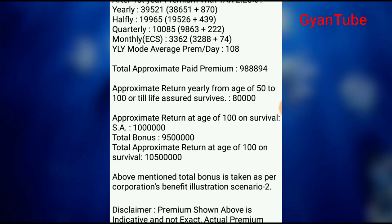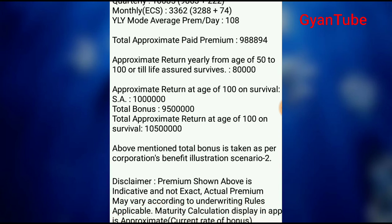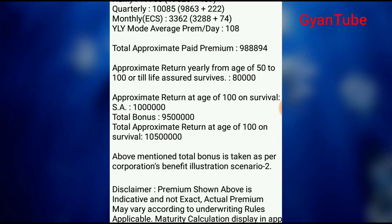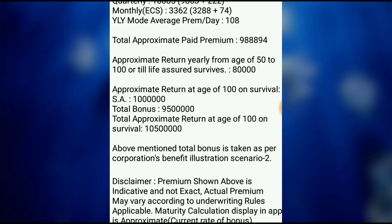Approximately, the return at age 100 would be around Rs. 1 crore 5 lakhs. This is a great scheme with good returns, because along with survival benefit — essentially a pension — you also receive a very large maturity amount. Total bonus is taken as per the corporation's benefit illustration scenario 2. Disclaimer: premium shown above is indicative and not exact; actual premium may vary according to underwriting rules. Maturity calculations displayed are approximately made.